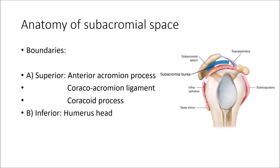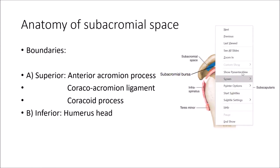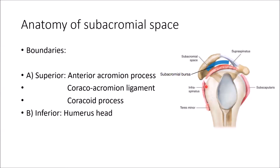A little bit of anatomy. The boundaries of the subacromial space: on the superior side you have your acromion, anterior acromial process, coracoacromial ligament, and the coracoid process. Inferiorly is your humeral head. In this picture you can see the subacromial bursa.